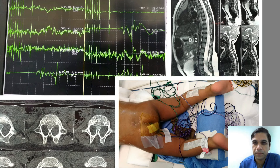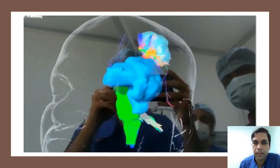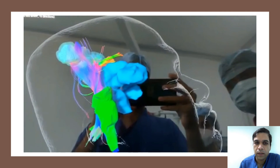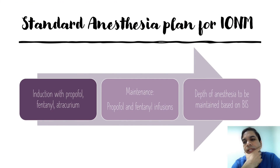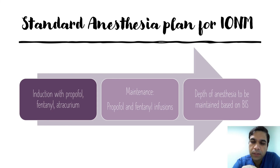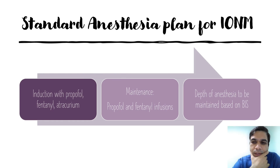A new technology we are using is called Brain Lab, where the blue colored structure represents the tumor. We can see the proximity of the tumor to the corticospinal tract. During surgery, Brain Lab guides us, telling us the direction and proximity to the corticospinal tract and motor pathways, so we can adjust direction and depth accordingly.